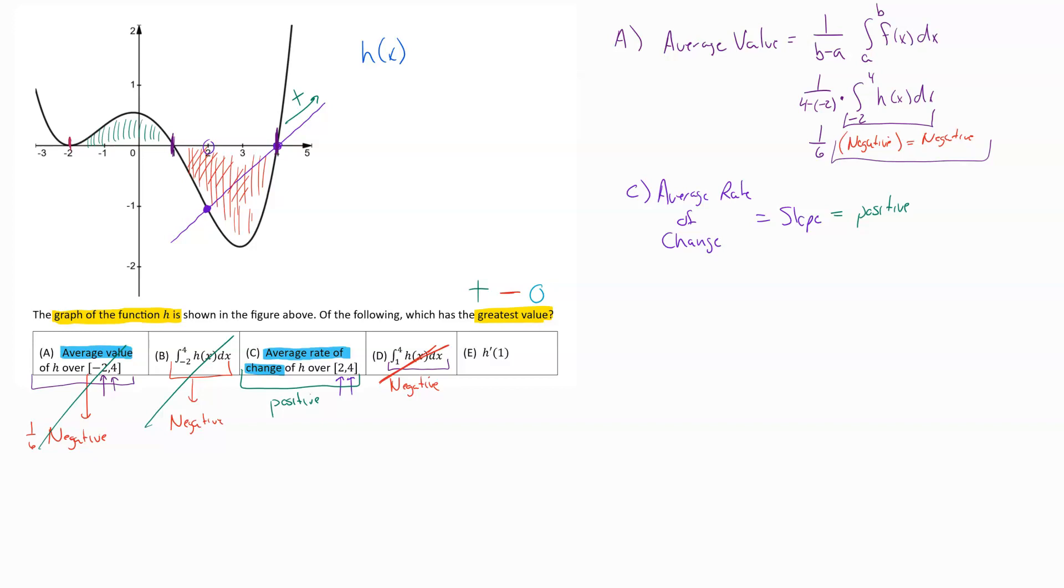Then the last piece here wants us to find out what is the derivative h prime at one. So this would be the slope at x equals one. So if I come over here and I look at my graph and I say, okay, at x equals one, that would be right there. What is the slope of that? Well, the slope of that tangent line would be headed down. That would be a negative amount. It would be decreasing. And so we know that the slope here would be negative.